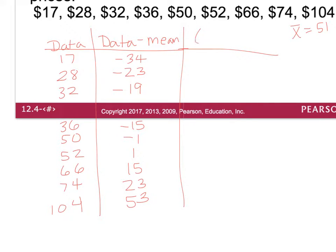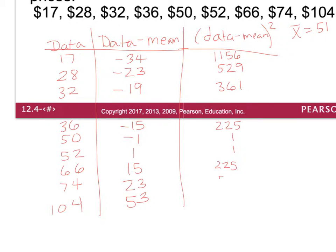Next, I square each value in that second column. Remember, two negatives multiplied make a positive. So I compute: (−34)², (−23)², (−19)², (−15)², (−1)², 1², 15², 23², and 53². Then I find the sum of all those squared values — that's what the sigma in the formula means — and I get 5,836.